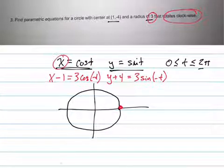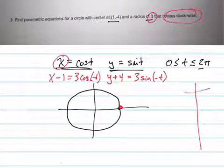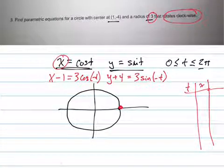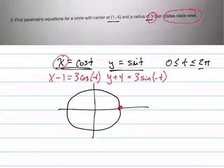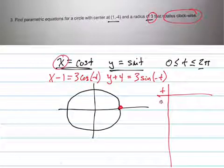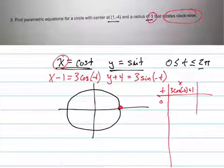So let's think this through. I'll make a t-chart here. When t equals 0, x is essentially 3 cosine negative t plus 1. Plugging in 0, cosine of 0 is 1, so that's going to be 4.